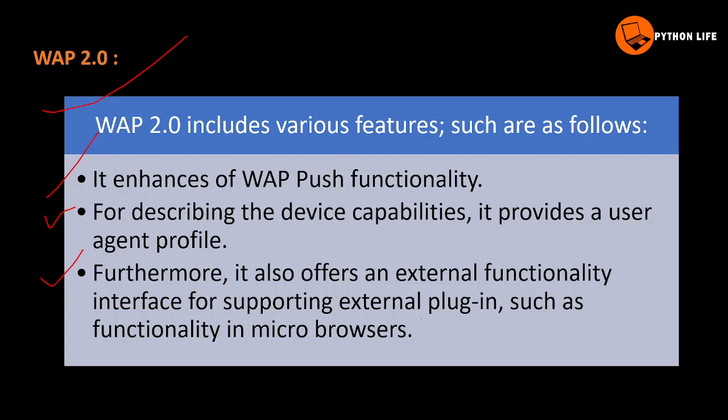These features include various additional capabilities such as dynamic access to web pages. For example, when using the browser, WAP 2.0 provides a web address with additional features built in.